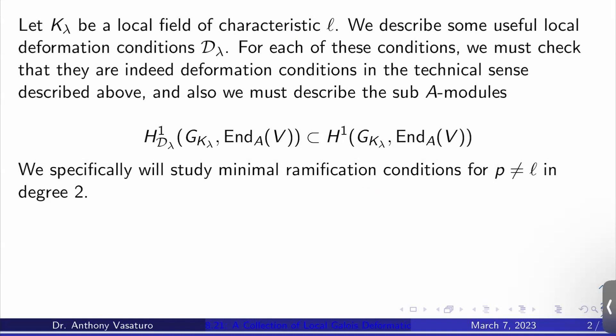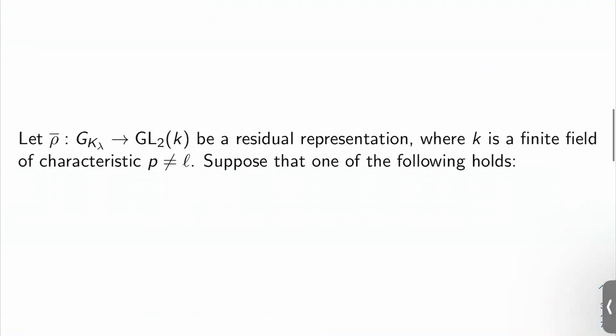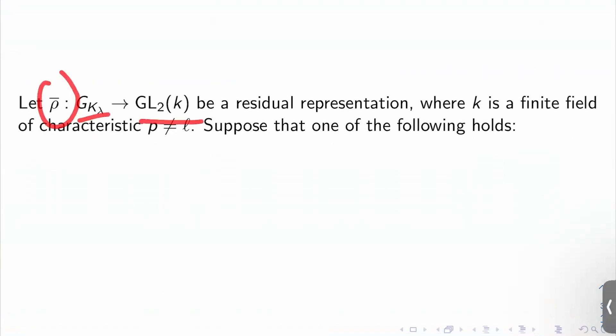And the next video, we'll look at some other conditions like ordinariness and flatness. So the setup is simple. Rho bar from G_K_lambda to GL_2 of K will be some residual representation where K is a finite field of characteristic P that isn't L.